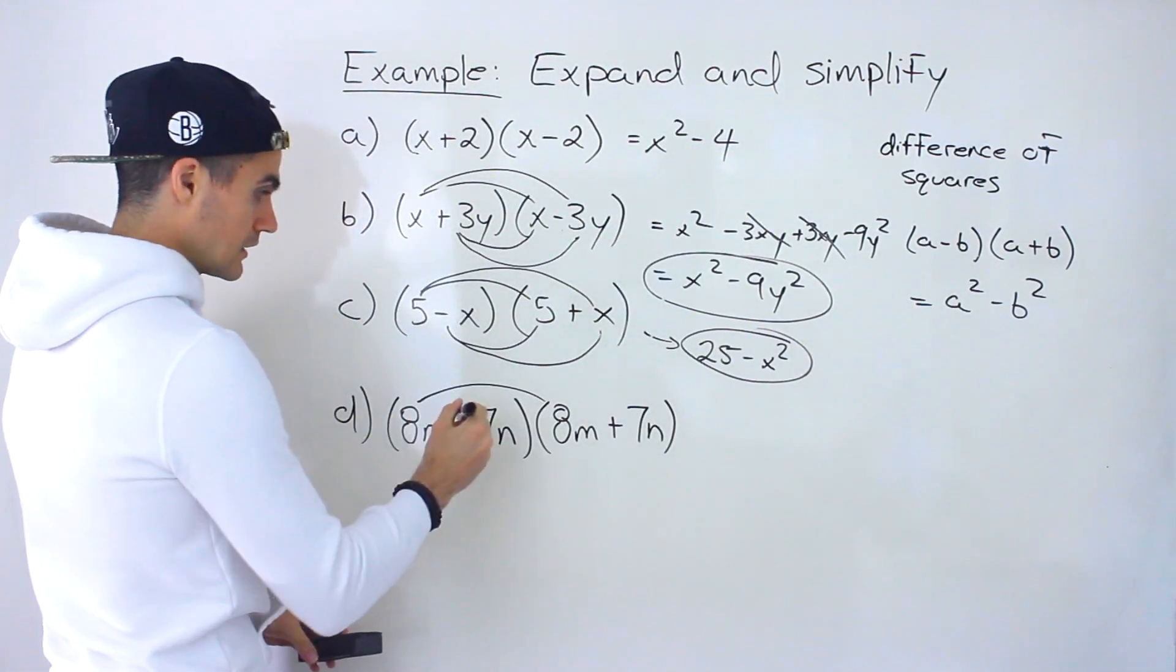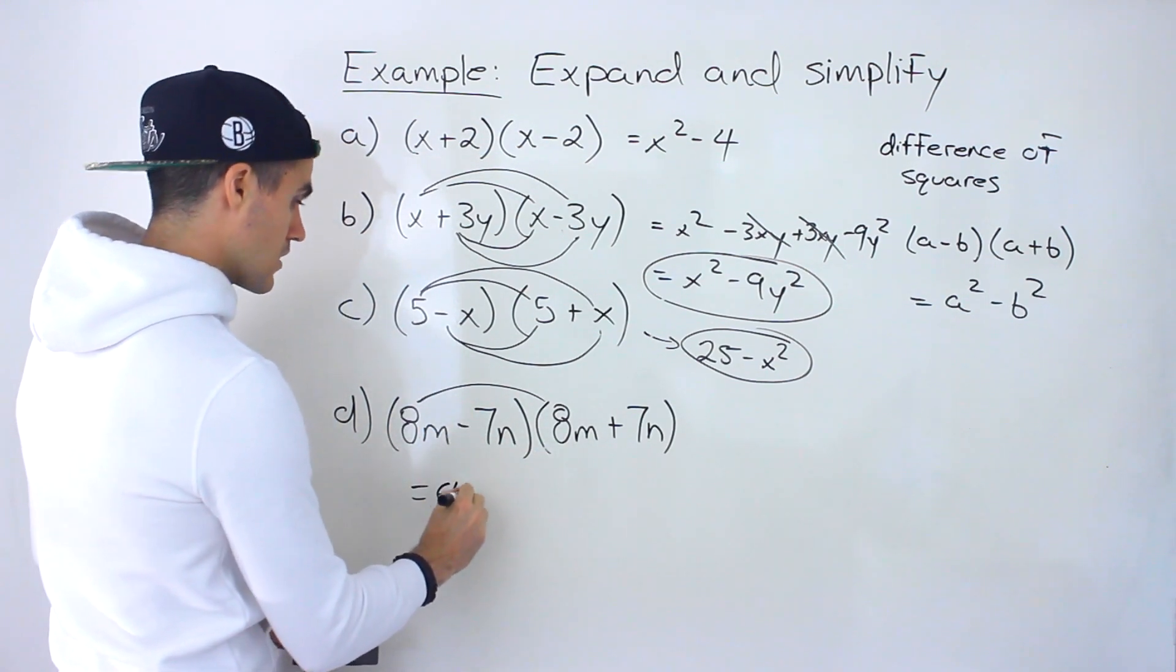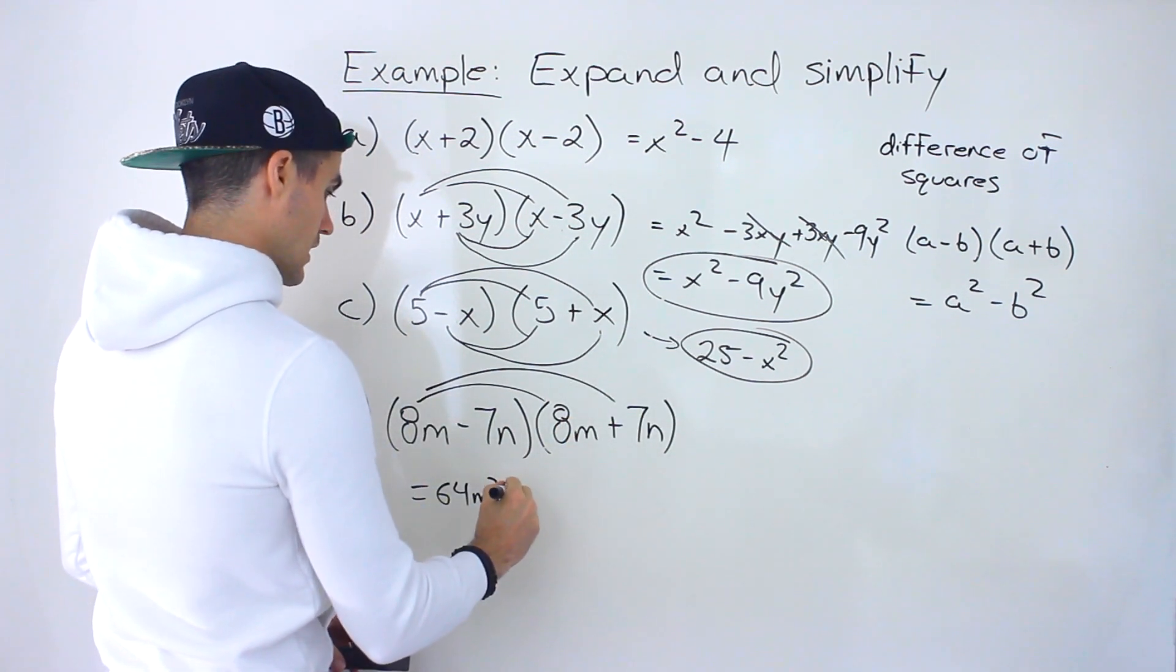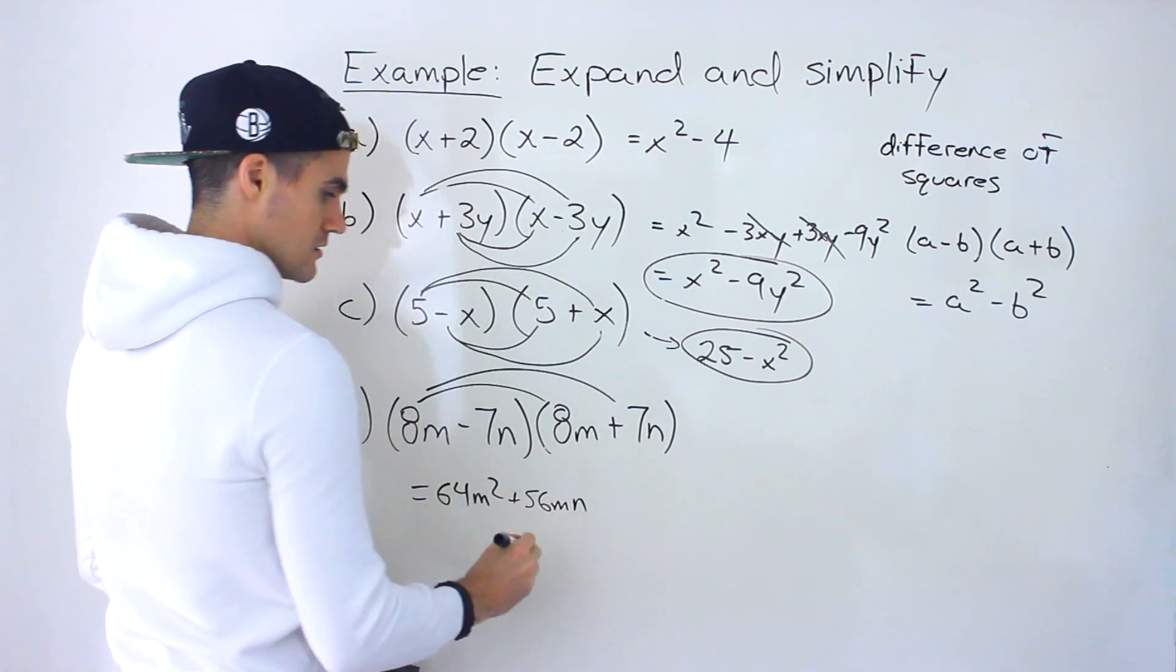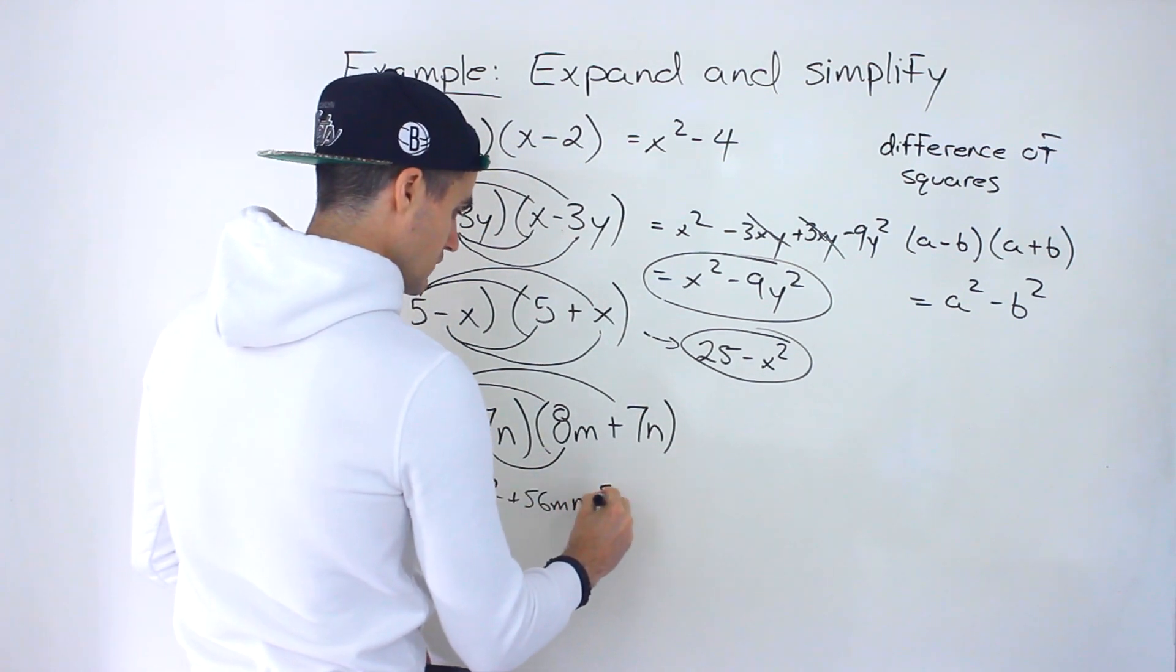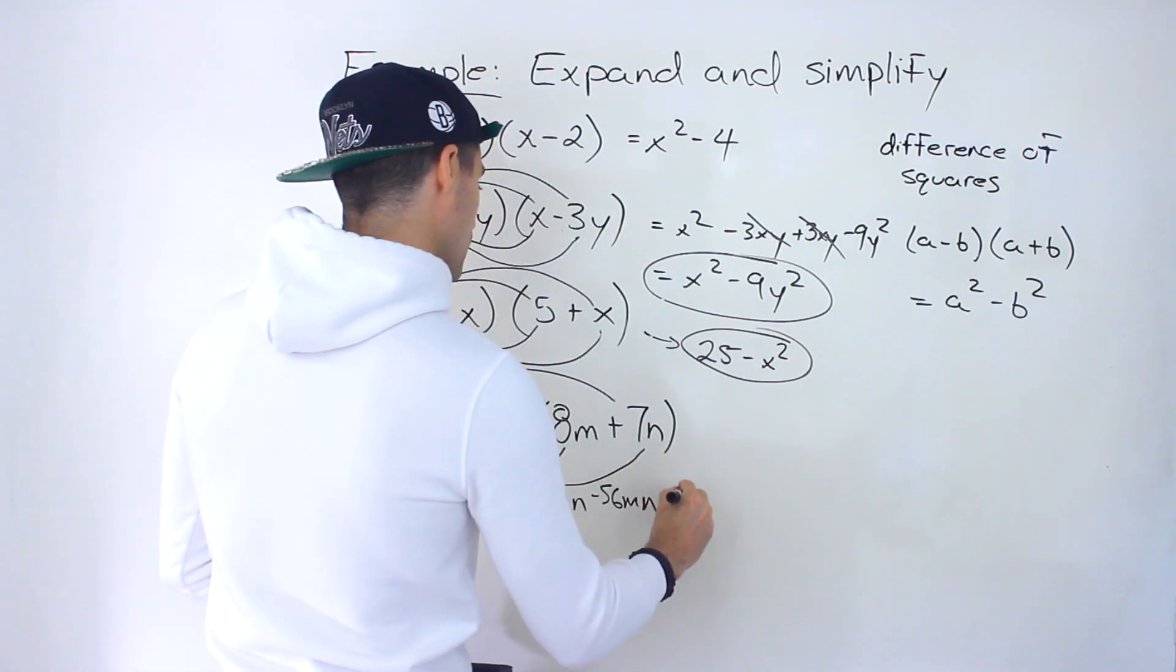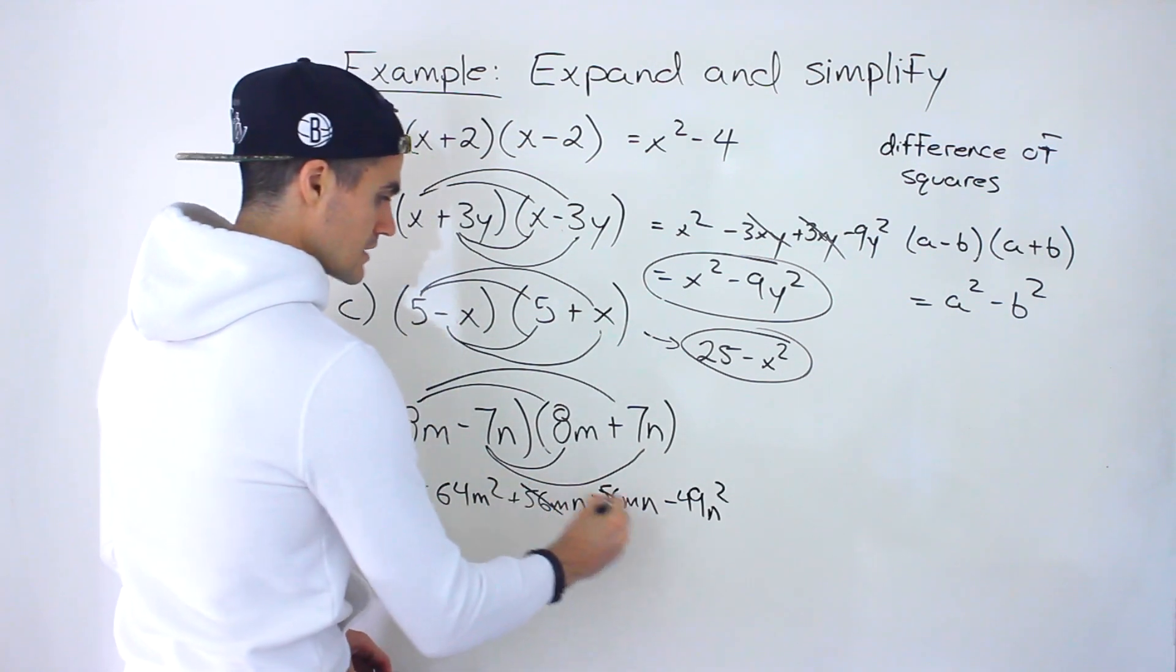Let's do it down here. Start it down here at least. 8m times 8m would give us 64m squared. 8m times positive 7n would give us positive 56mn. Minus 7n times 8m would give us minus 56mn. And then negative 7n times positive 7n would give us minus 49n squared.